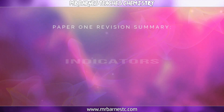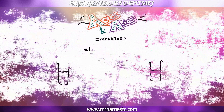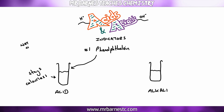The second part of this video looks at indicators and what colors they go in acids and alkalis. The first is phenolphthalein — in an acid it stays colorless (note: say colorless, not clear, since clear blue or clear red are possible). In an alkali, phenolphthalein goes from colorless to pink.